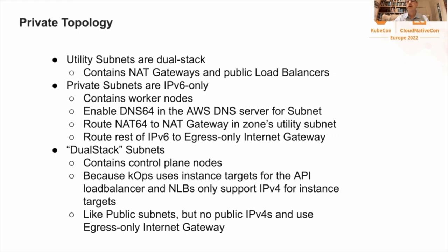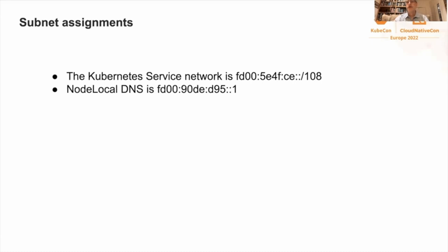For the control plane nodes, KOPS creates a new type of subnet called dual stack. Control plane nodes need to be dual stack because KOPS uses instance targets for the API server load balancer, and AWS load balancers only support IPv4 for instance targets. This type of subnet is like public subnets, except nodes don't get public IPv4 addresses and it uses an egress-only internet gateway. KOPS also needs to make some arbitrary assignments for in-cluster resources. As these addresses are not routable from outside the cluster, they are made from the unique local address space.